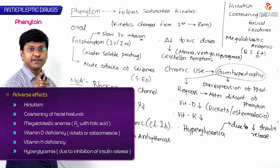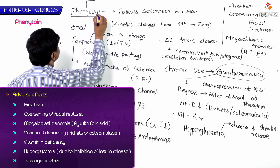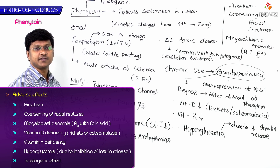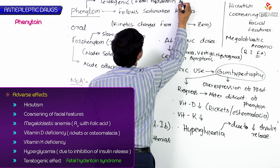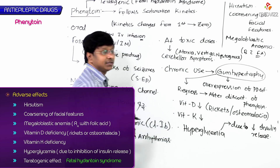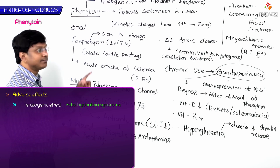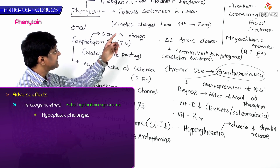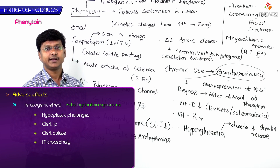Phenytoin has teratogenicity. When taken by a pregnant mother, it causes fetal hydantoin syndrome in the fetus. This syndrome includes hypoplastic phalanges (underdeveloped fingers), cleft lip, cleft palate, and microcephaly.